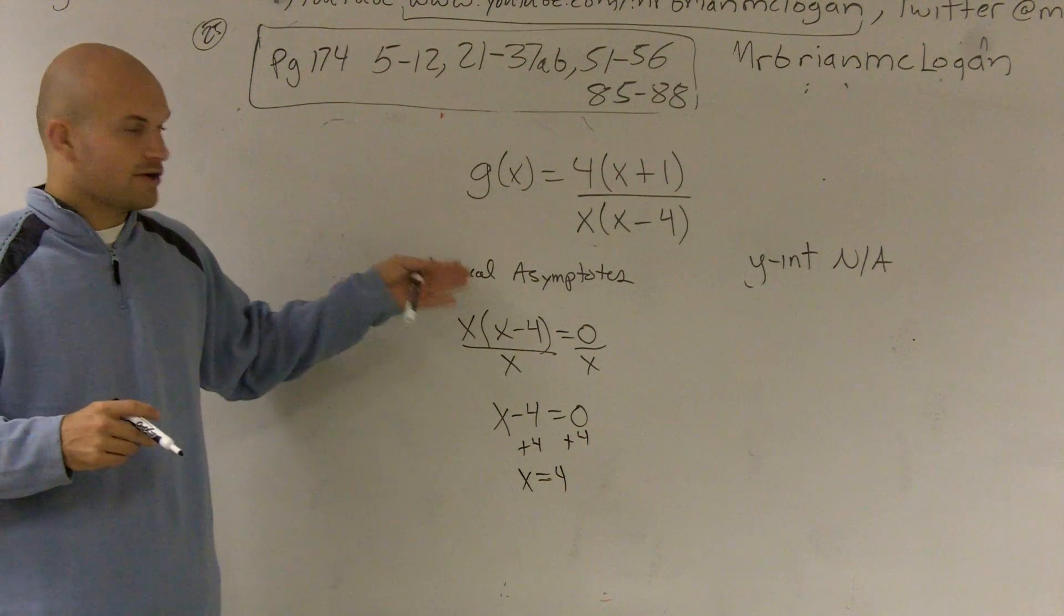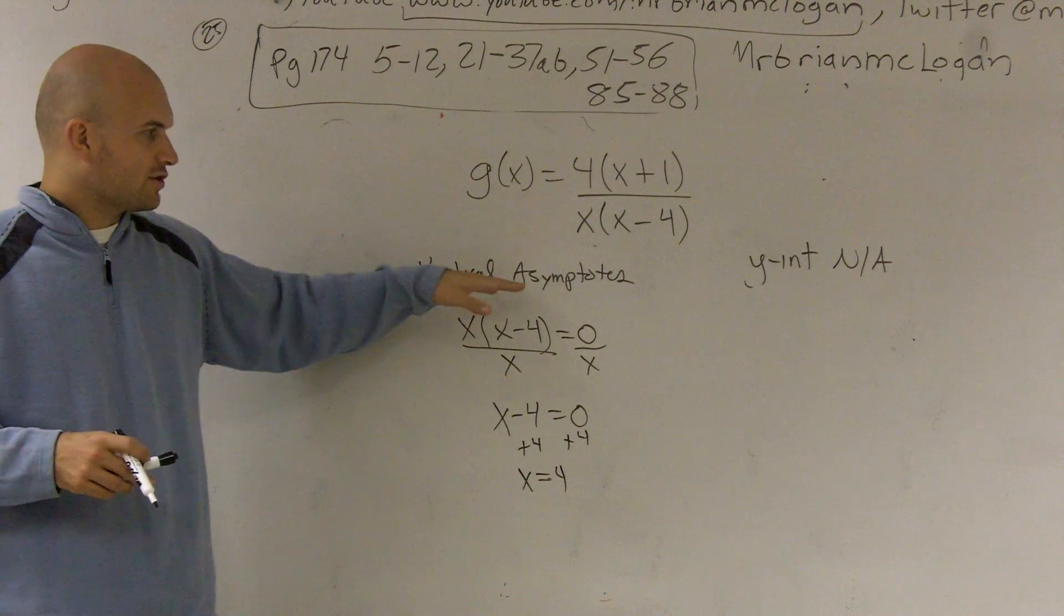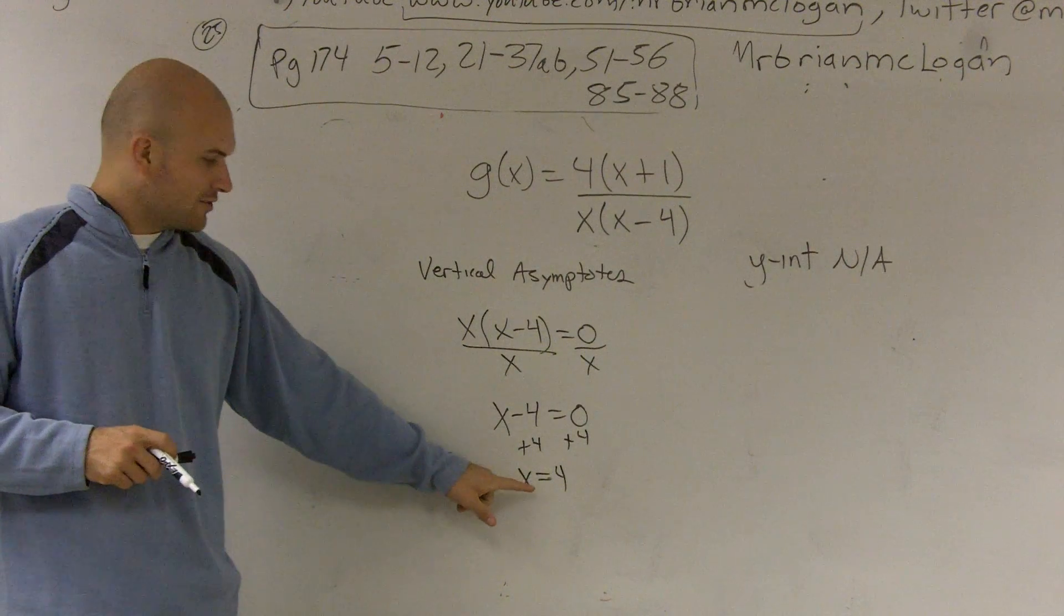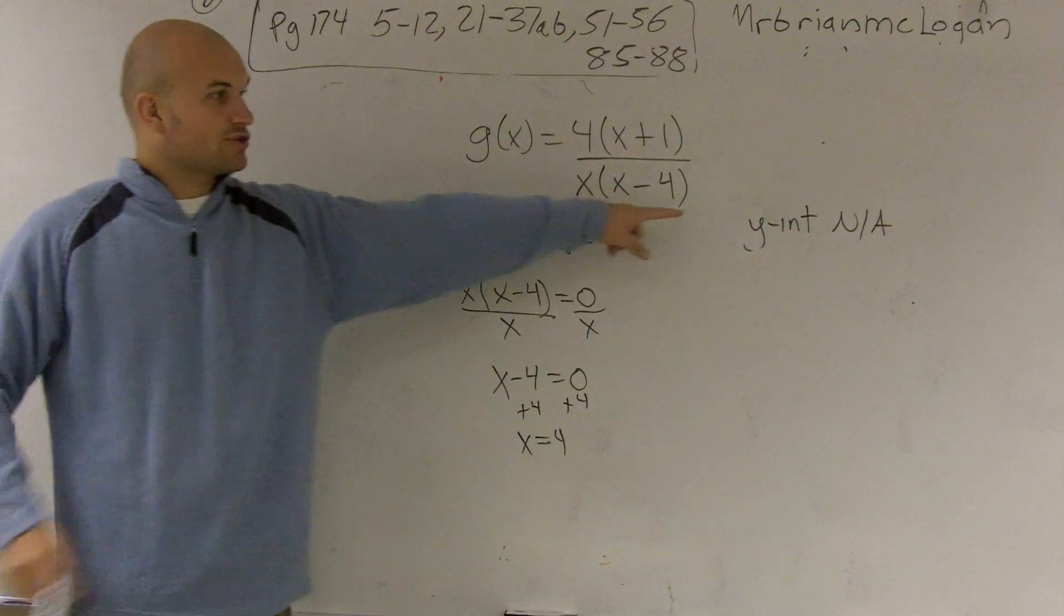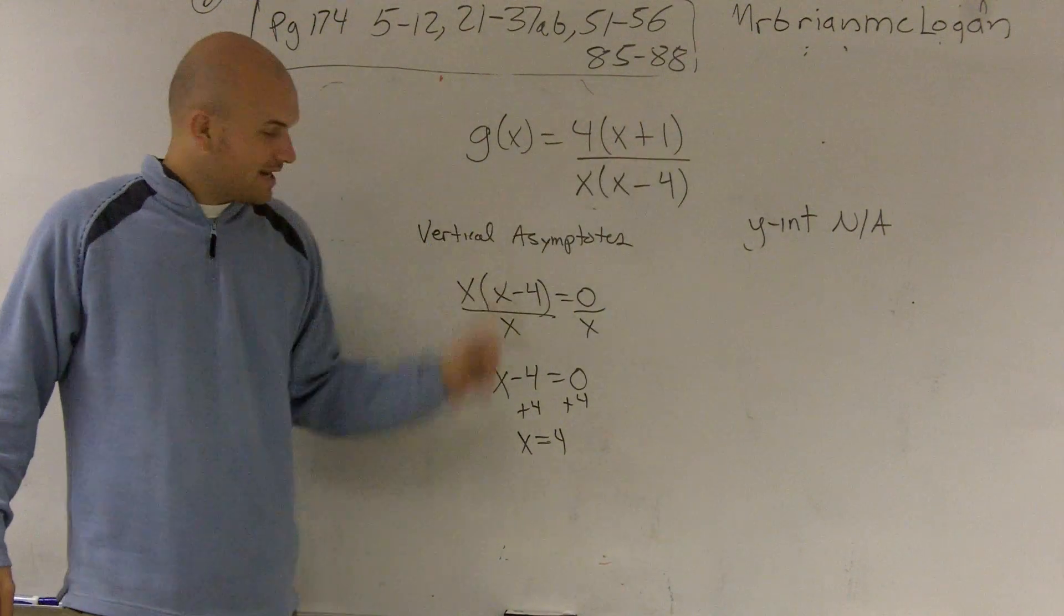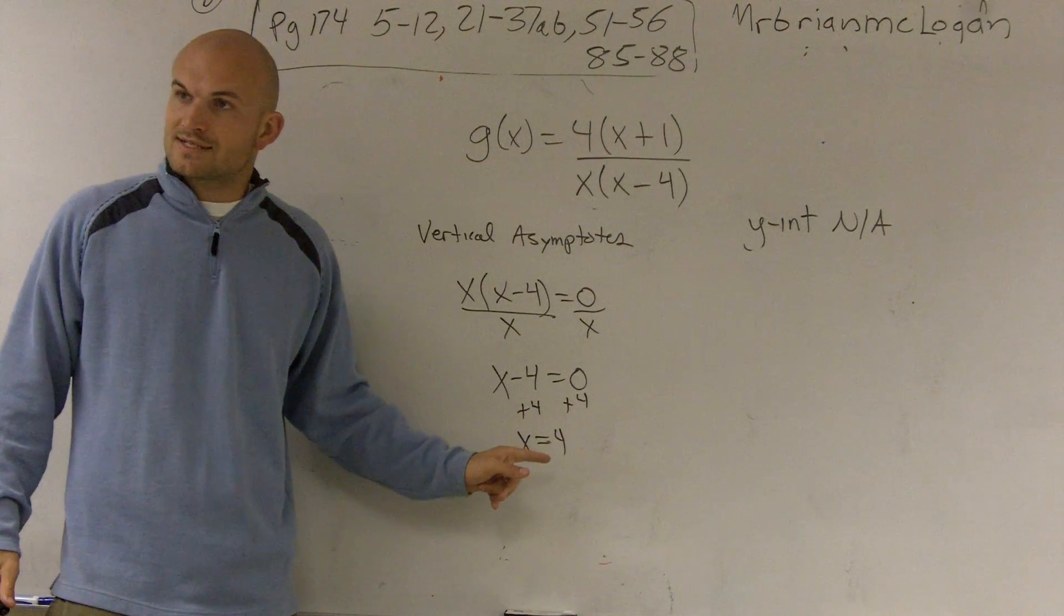So what that means is on this vertical asymptote, my graph is never going to cross or touch when x equals 4. It's never going to cross or touch the y-intercept, and it's never going to touch the graph at when x is equal to 4.